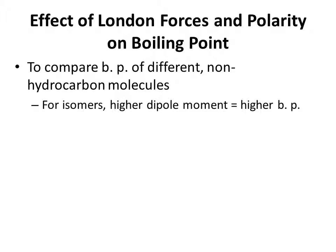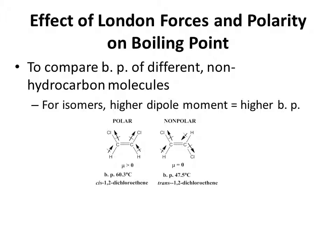If you're comparing the boiling points of different compounds that are not hydrocarbons — for isomers — the more polar isomer will always have the higher boiling point, as in the case of cis-1,2-dichloroethene, with a boiling point of 60.3 degrees Celsius, where the dipoles do not cancel out, versus trans-1,2-dichloroethene, where the dipoles are equal and opposite, canceling out, giving it a mu of zero. As a nonpolar molecule, it only has London forces and thus has a lower boiling point.